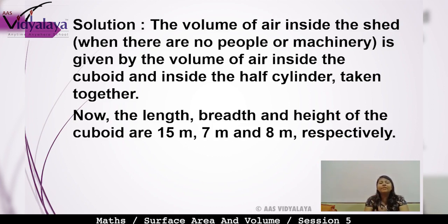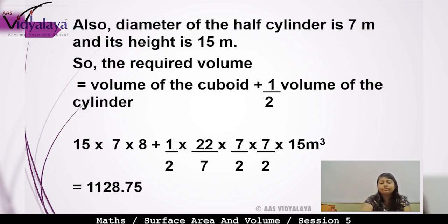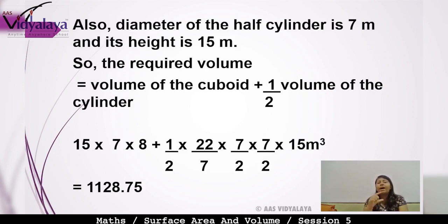The length, breadth, and height of the cuboid are 15m, 7m, and 8m respectively. The diameter of the half cylinder is 7m and its height is 15m. So the required volume equals volume of cuboid plus half the volume of cylinder — that is: (15 × 7 × 8) + (½ × π × r² × h). Since diameter is 7, radius = 7/2. Formula for a full cylinder is πr²h, so for a half cylinder it becomes ½πr²h.